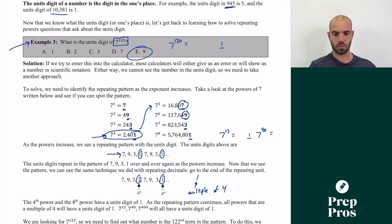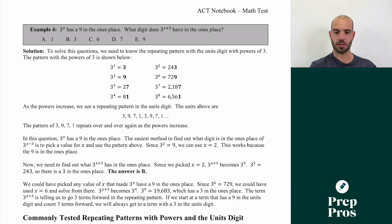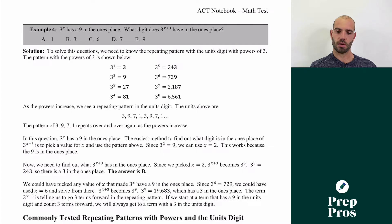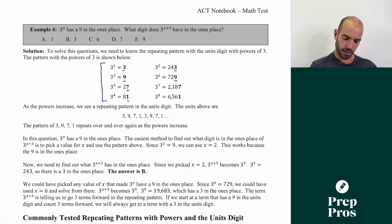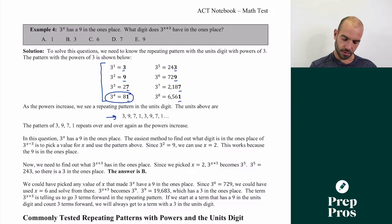That seems really hard, but you can memorize these patterns or just write them down on test day — they almost always repeat in fours. Now, if the ACT wants to be mean they could present this in a more confusing way as a really hard end-of-test question. Example four says: three to the x has a nine in the ones place. What digit does three to the x plus three have in the ones place? Threes also follow a pattern: three to the first is 3, three squared is 9, three cubed is 27, three to the fourth is 81, three to the fifth is 243. The pattern is 3, 9, 7, 1 — repeating. Every time the power is a multiple of four, it ends in a 1.